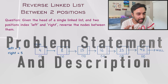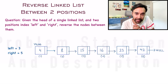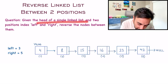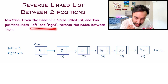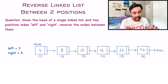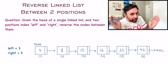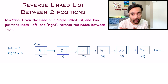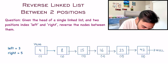First of all, let's make sure that we are understanding the problem statement correctly. In this problem, you are given the head of a singly linked list and two position indexes — that is left and right. And what you have to do is reverse the linked list between these two positions. Let us look at a sample test case.